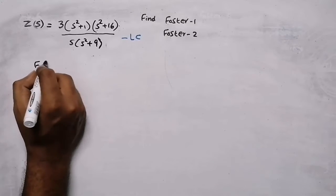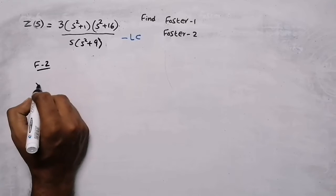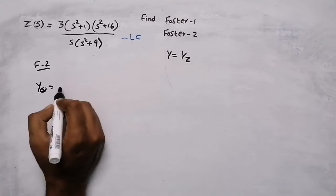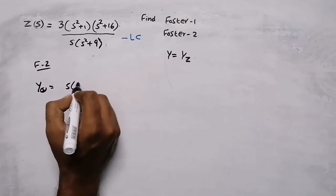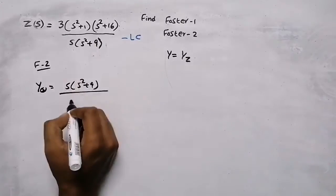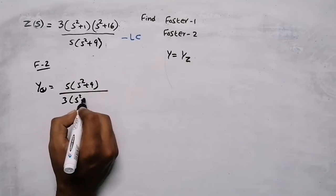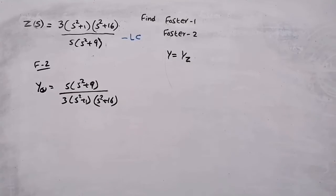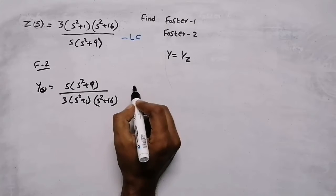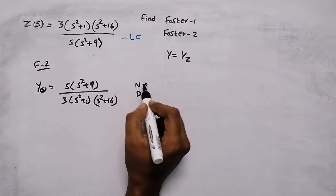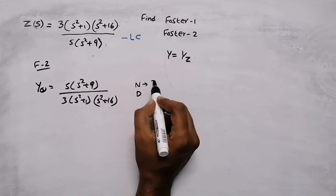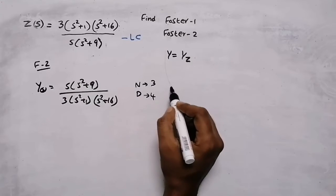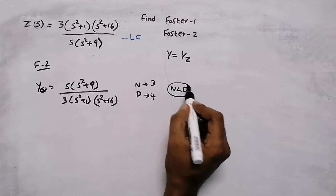Now we find the Foster 2 network, which requires the admittance — the reciprocal of impedance. So the admittance Y(s) has numerator s(s squared plus 9) and denominator 3(s squared plus 1)(s squared plus 16). Checking degrees: numerator degree is 3, denominator degree is 4. Since the numerator degree is less than the denominator degree, there is no problem and we can proceed directly to partial fractions.